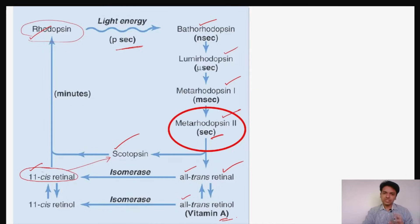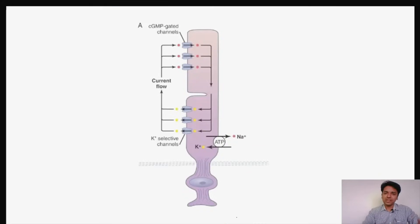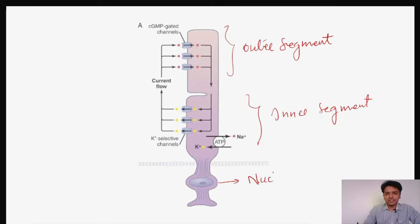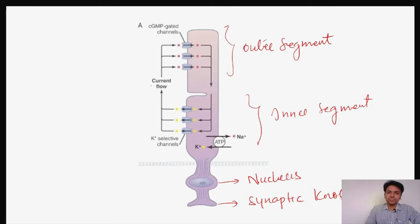The most important step in this entire conversion is metarhodopsin 2, which causes changes in the rods so that an impulse is produced and transmitted to the next cell — the bipolar cell. Now let's look at the structure of the rod. The rod is divided into two parts: the outer segment and the inner segment, along with the nucleus and synaptic knob.